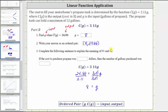To explain the meaning: the output of 24.88 represents the total cost in dollars, and the input we found of eight represents the gallons of propane. Therefore, if the cost to purchase the propane was $24.88, then the number of gallons purchased was eight.